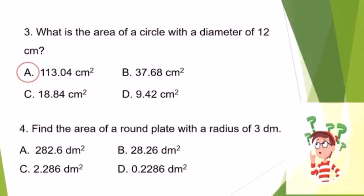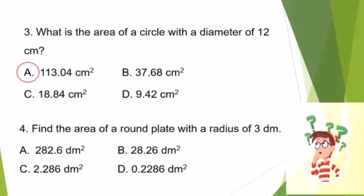Number 4. Find the area of a round plate with a radius of 3 decimeters. A. 282 and 6 tenths square centimeters? B. 28 and 26 hundredths square centimeters? C. 2 and 286 thousandths square centimeters? Or D. 2,286 ten thousandths square centimeters? The correct answer is letter B.